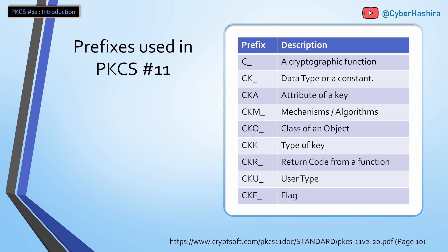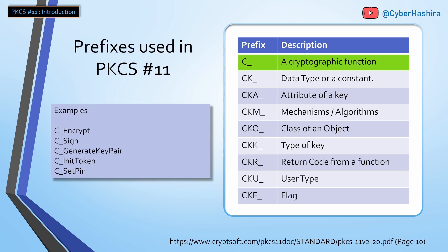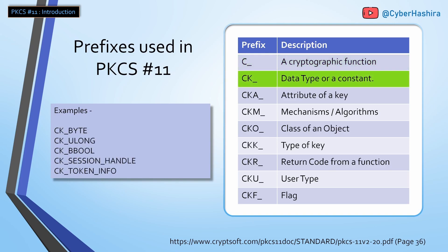On your screen are some prefixes used in PKCS#11 — this is not a complete list, only the frequently used ones. The prefix C_ denotes functions in PKCS#11 that perform some operation. Most are cryptographic functions but there are some management functions as well. Examples include C_Encrypt, C_Sign, and C_GenerateKeyPair as cryptographic functions, whereas C_InitToken and C_SetPIN are management functions. CK_ is a prefix for a data type or a constant — these data types will be covered in a later video.